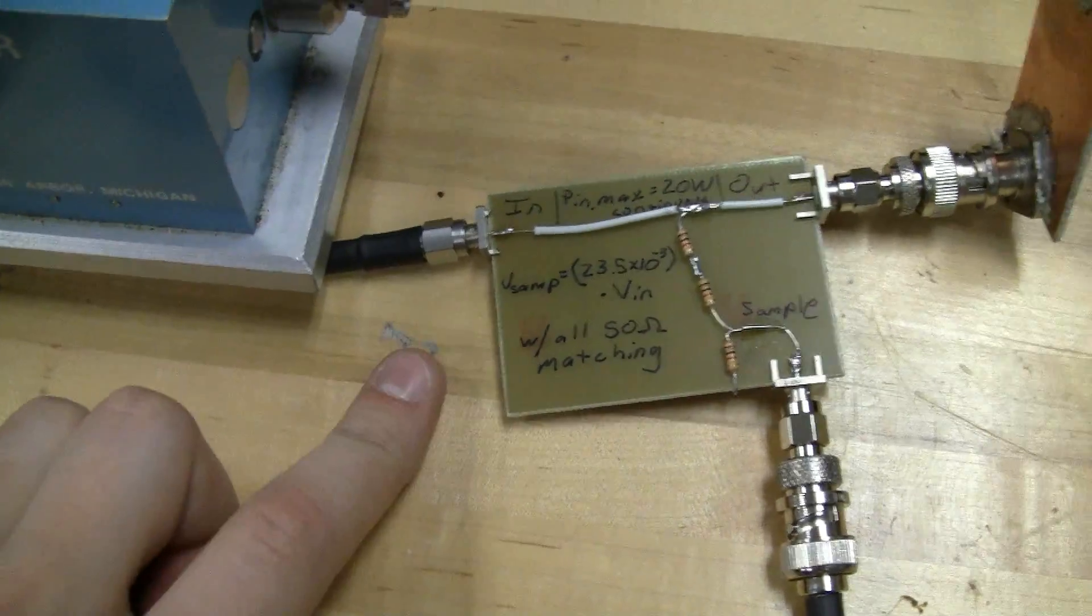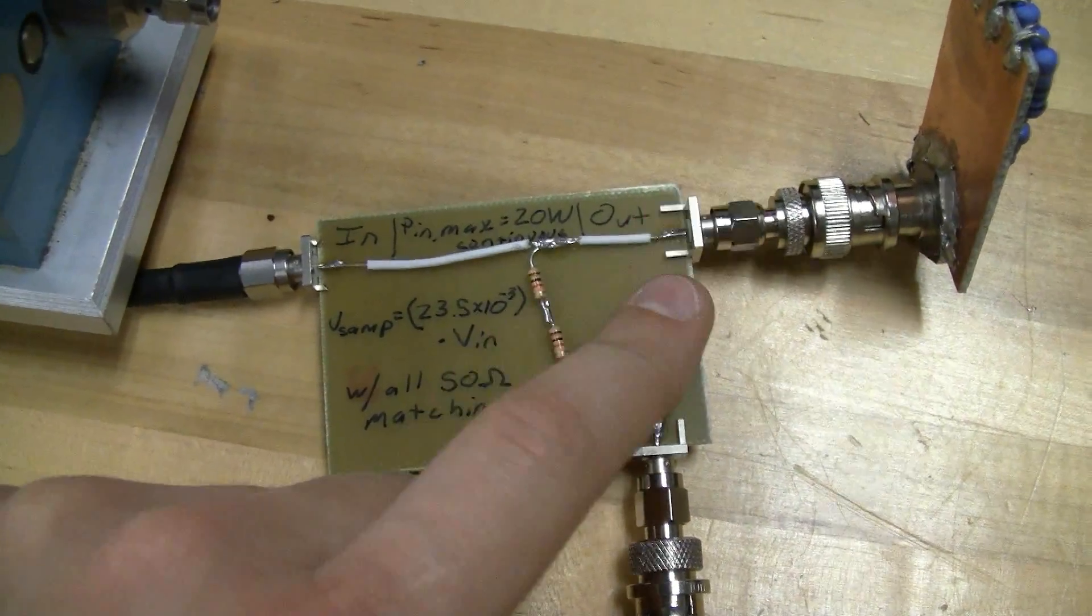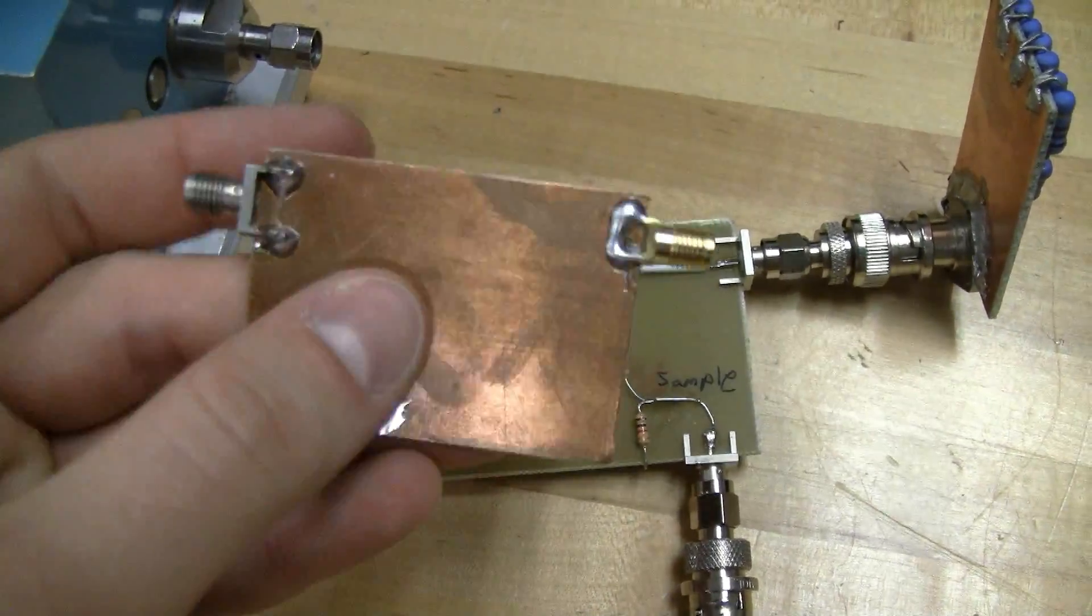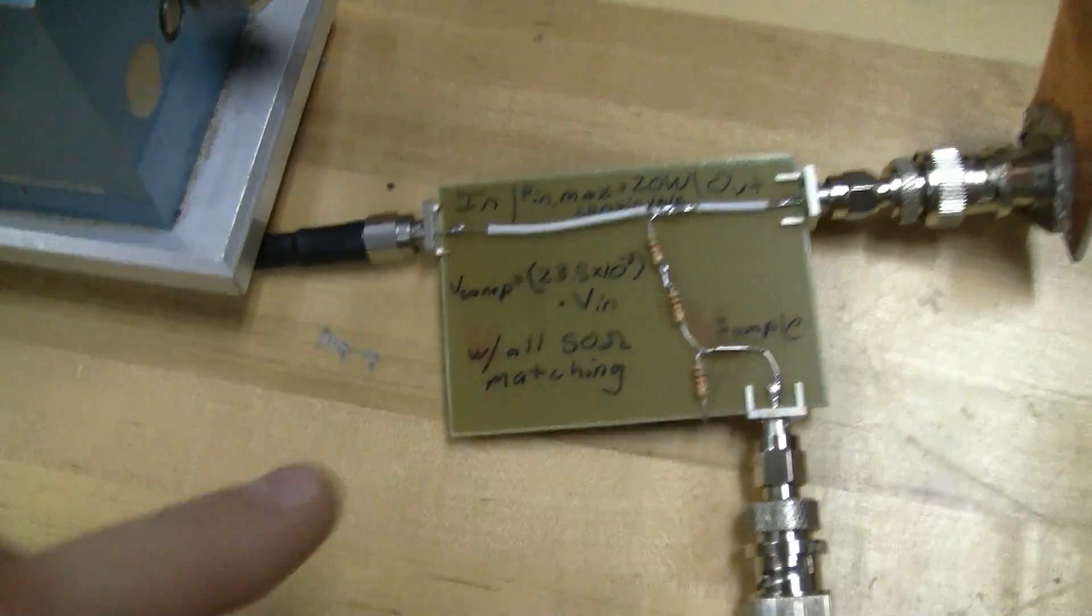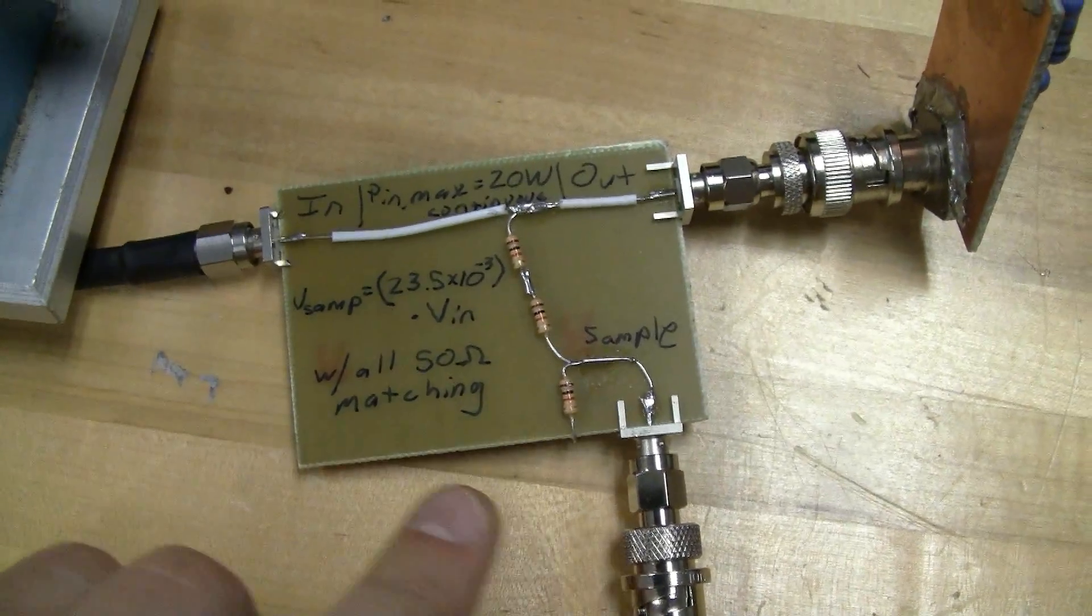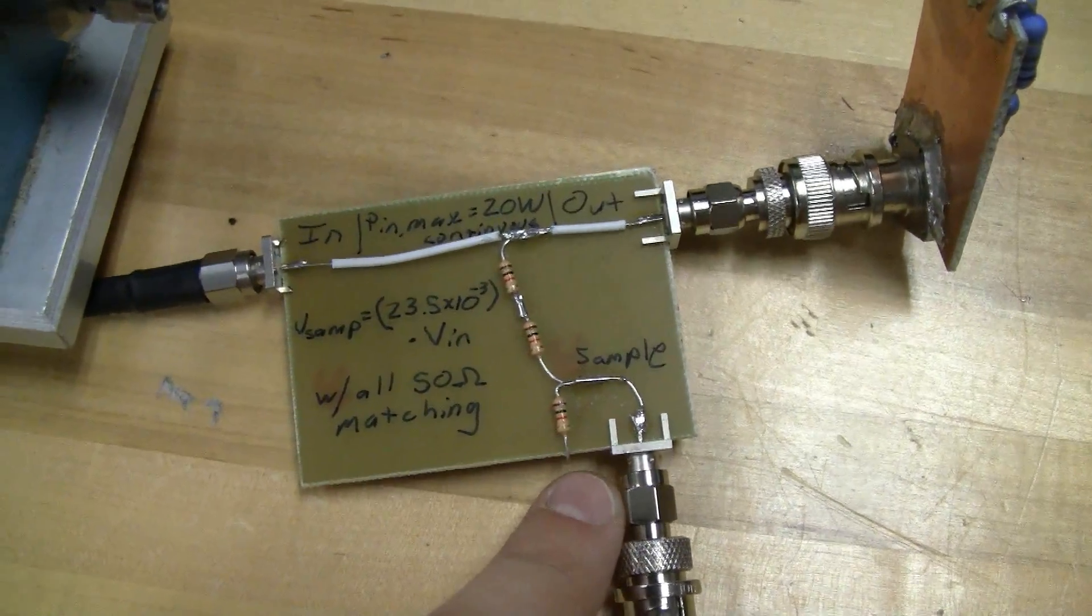So this is the first RF sampler board that I built. These are edge mount SMA connectors and this is a similar board I'm going to use in the new one that's just a copper backed FR4. And I've got edge mount or edge launch SMAs and input, output and the sampler here.